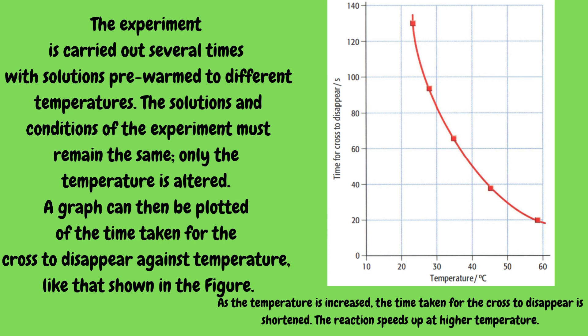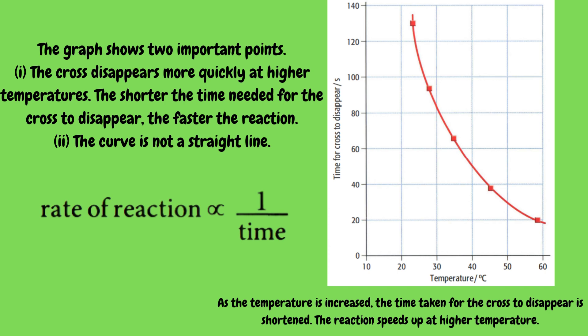The experiment is carried out several times with solutions pre-warmed to different temperatures. The solutions and conditions must remain the same — only the temperature is altered. A graph is plotted of the time taken for the cross to disappear against temperature. As temperature increases, the time taken for the cross to disappear is shortened, meaning the reaction speeds up at higher temperature. The cross disappears more quickly at higher temperatures — the shorter the time, the faster the reaction. Note that the curve is not a straight line, because the rate of reaction is inversely proportional to time.